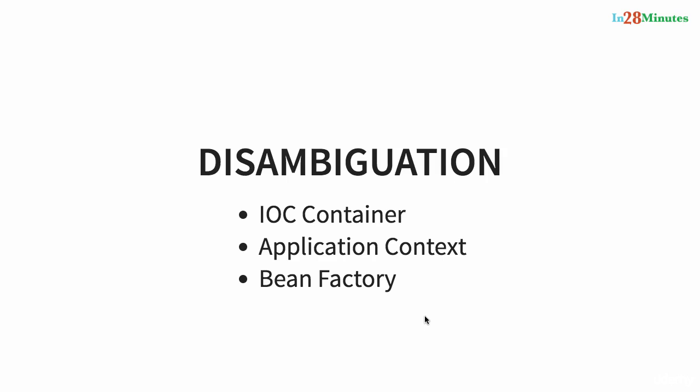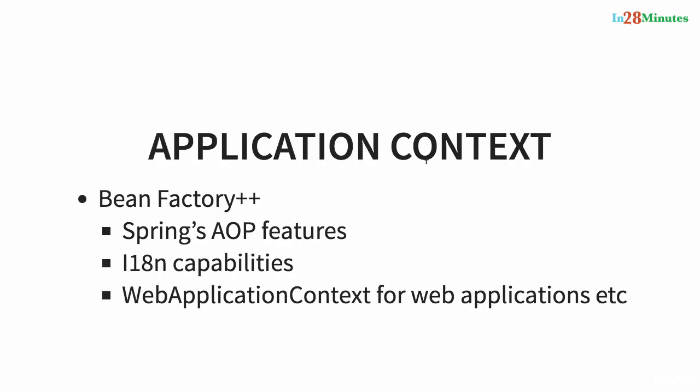In all the examples until now we have been making use of application context, because Spring recommends using application context in 99% of scenarios. What is the difference between application context and bean factory? Application context is nothing but bean factory plus plus. The core features of Spring are inside the jar called spring-core, and that's what the bean factory provides — basic management for beans and wiring of dependencies, nothing more.